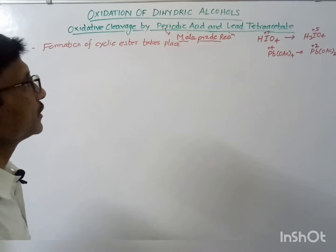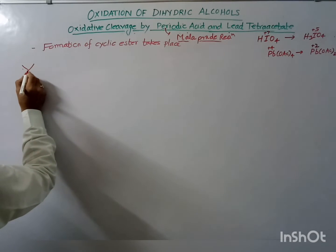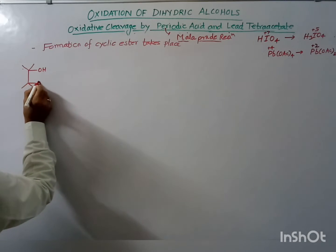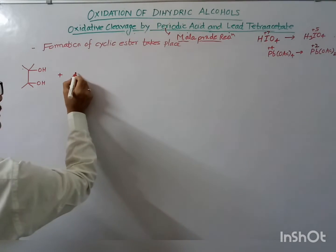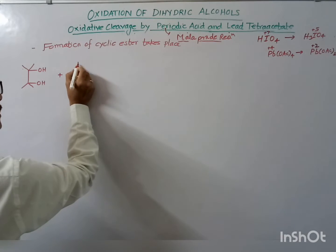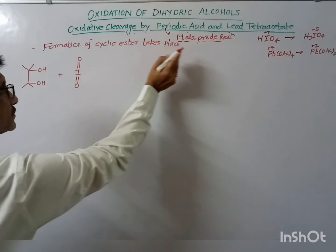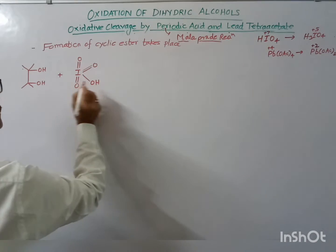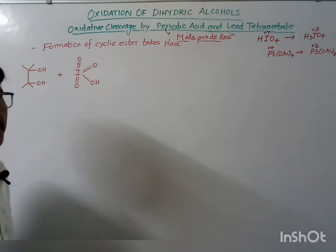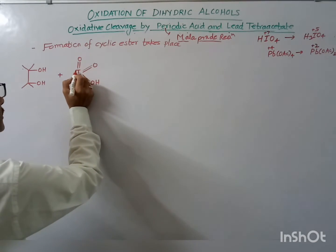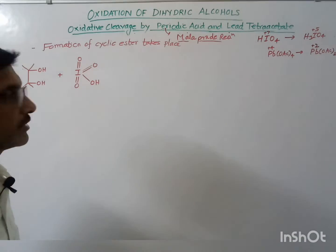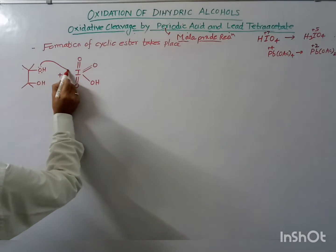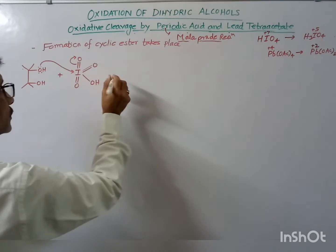Now if you see the reaction, suppose we have a dihydric alcohol and it reacts with periodic acid, HIO4. The iodine, being electron deficient, has a partial positive charge, and the oxygen has a partial negative charge. The lone pair of electrons on oxygen will attack the iodine, and the pi bond will break.